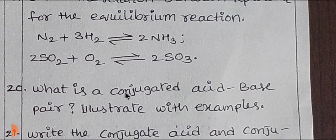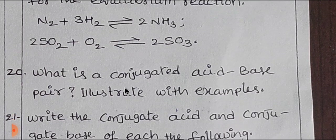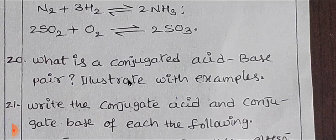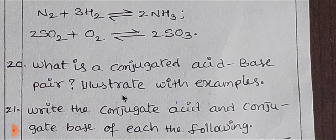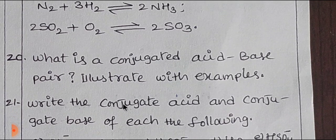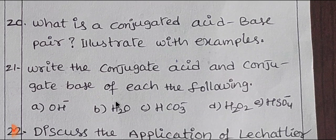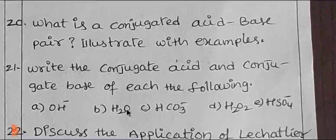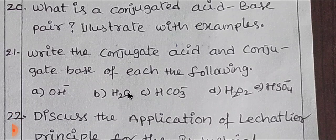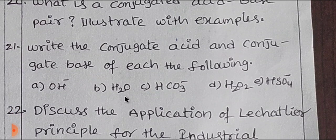The next topic is conjugate acid-base pairs. You have to explain the definition and examples. The next one is conjugate acid and conjugate base. You have to write the conjugate acid and conjugate base and write the mixture — that is 5 items.